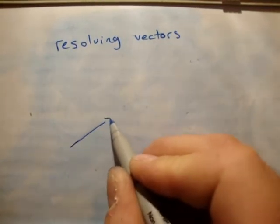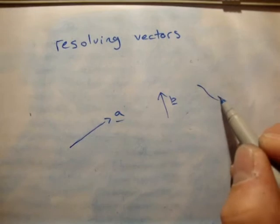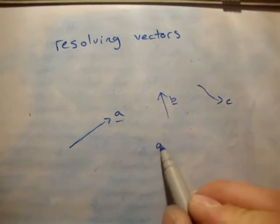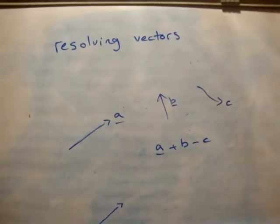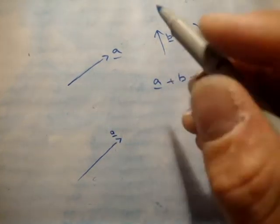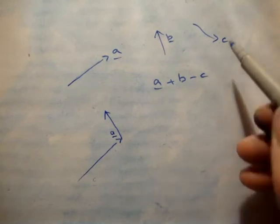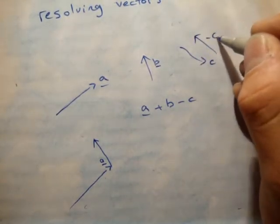If you have a vector A, a vector B, and a vector C, to add vectors you put the tail of the second one onto the head of the first one and draw your resultant vector from the tail of the first to the head of the last. So if I want to get A plus B minus C, I draw A, then put the tail of B onto the head of A. Then since it's minus C, if this here is C, then this one here is minus C.